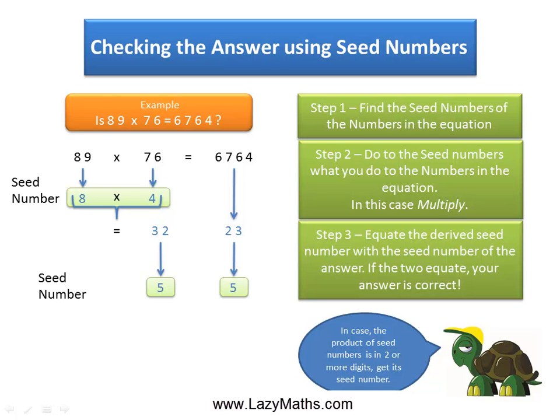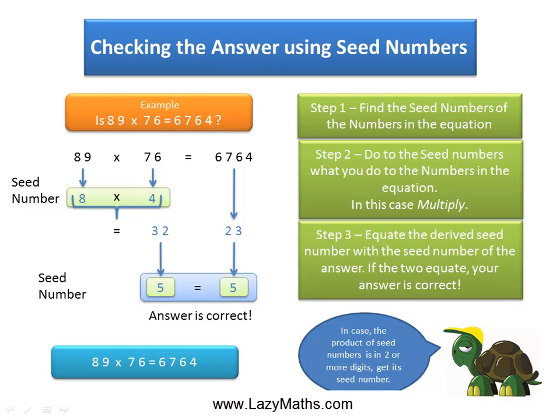As you can see, the seed number on the left side of the equation is 5 and the right side of the equation is 5. And since both of them are equal, our answer is correct. So 89 times 76 is indeed 6764.